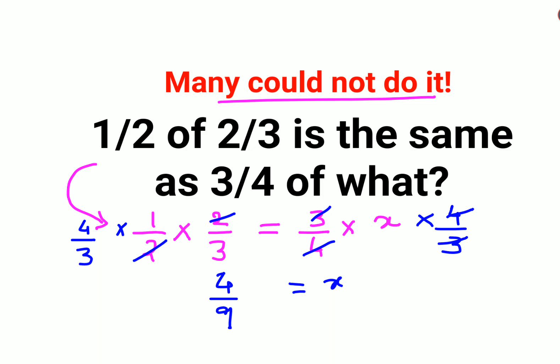So now let's see, 1 upon 2 of 2 by 3, that is what? 1 upon 2 of 2 by 3 that gets you 1 by 3. And they are saying 3 by 4 of X, right? So 3 by 4, that would be 3 by 4 of X which is 4 by 9.